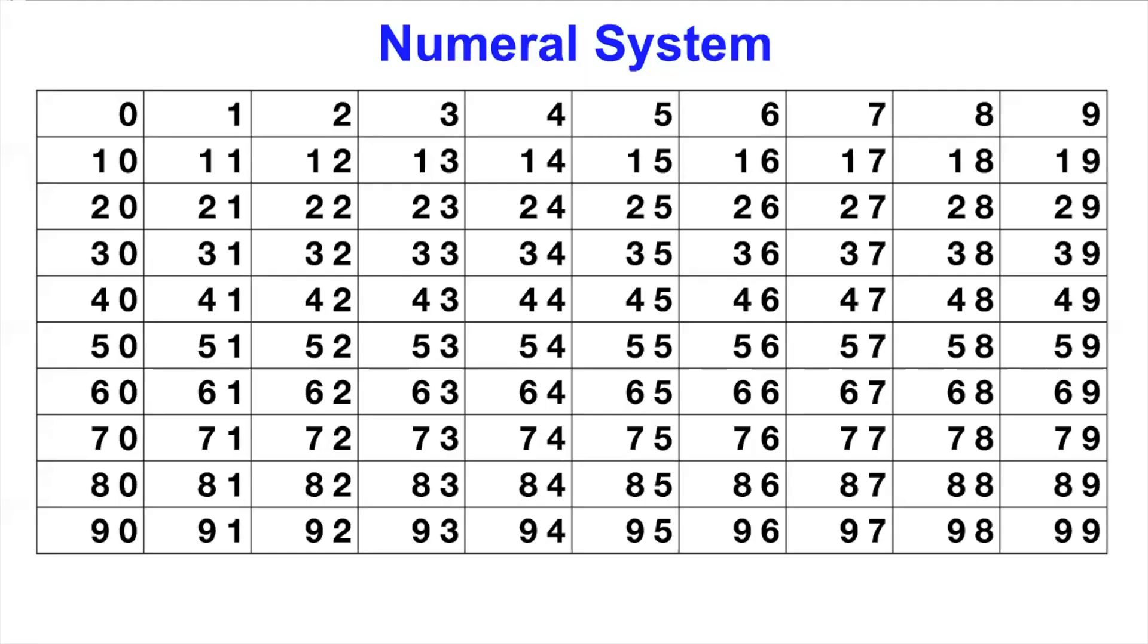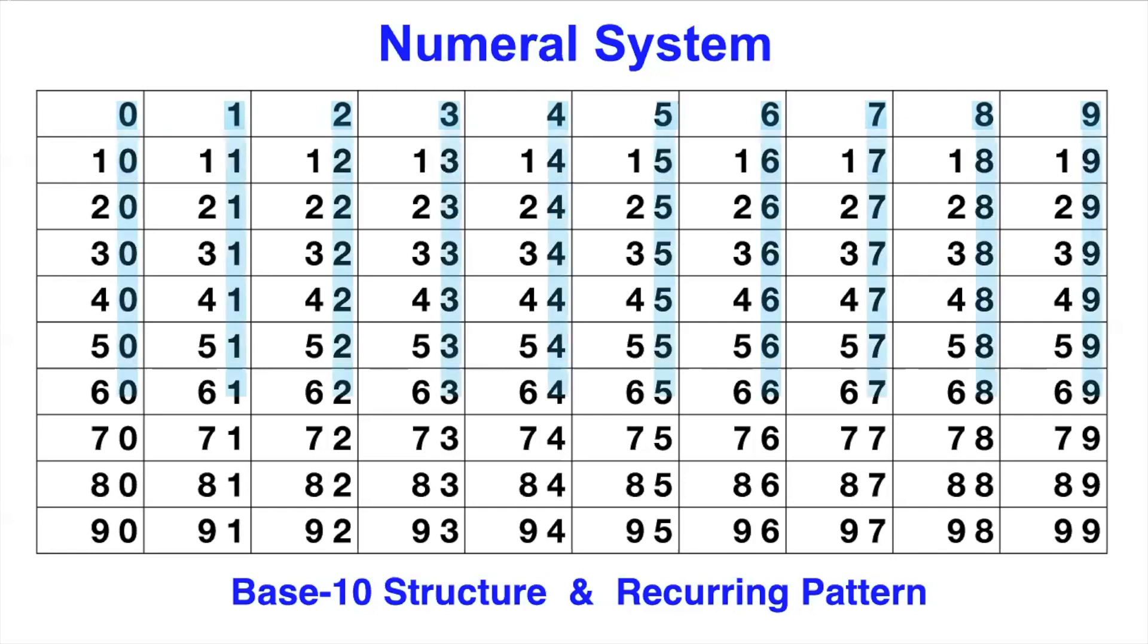Our numeral system is organized in a base 10 structure and recurring pattern. 10 rows and 10 columns get you to 99. There are only 10 single digit numbers, 0 to 9. Other numbers are just combination of those 10 numbers. Numbers 0 to 9 in the first row recur in every row in the 1st digit. In the first column, numbers 1 to 9 recur in every column in the 10th digit.